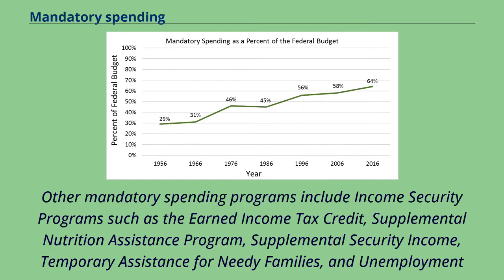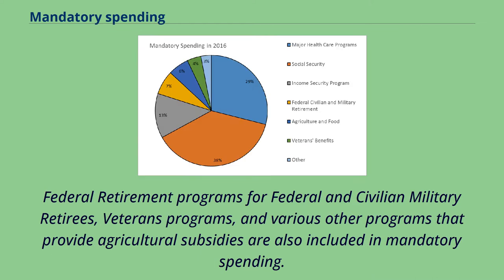Other mandatory spending programs include income security programs such as the Earned Income Tax Credit, Supplemental Nutrition Assistance Program, Supplemental Security Income, Temporary Assistance for Needy Families, and Unemployment Insurance. Federal retirement programs for federal and civilian military retirees, veterans programs, and various programs that provide agricultural subsidies are also included in mandatory spending.